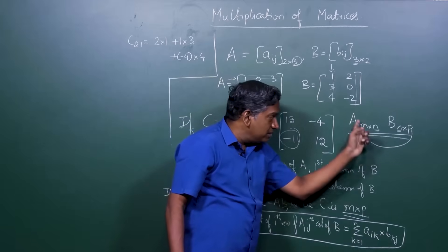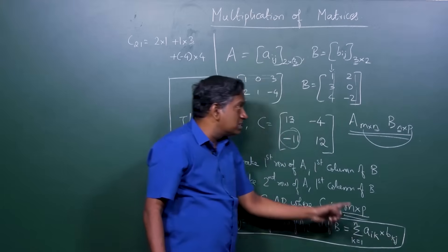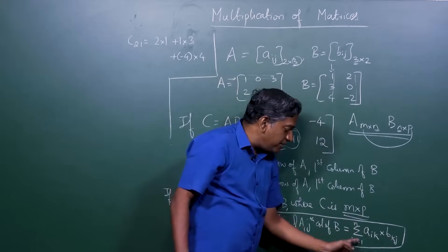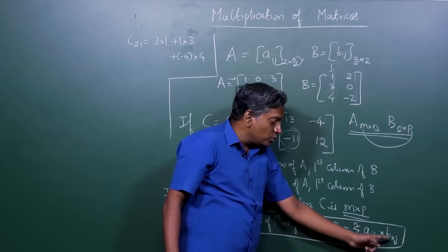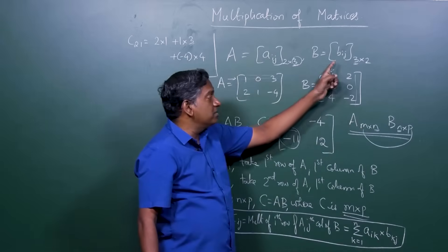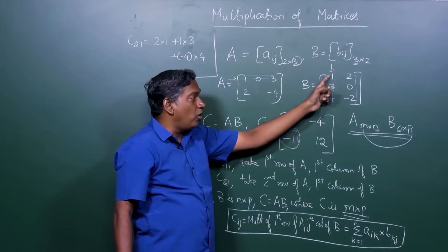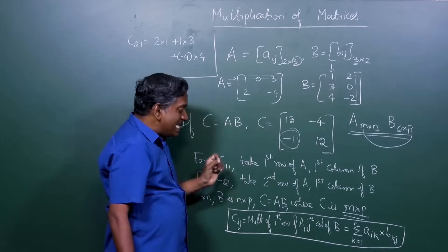And then in the second matrix, you take the j-th column, all the rows. Bkj, where k is varying from 1 to n. So you will go B1j, B2j, B3j, B4j. Everything will be taken. And that is what you mean by, that's what happens by taking this column and all the rows.